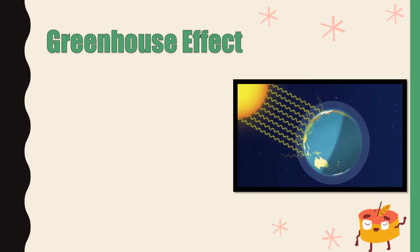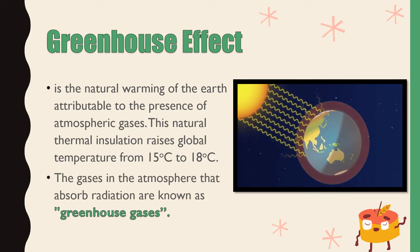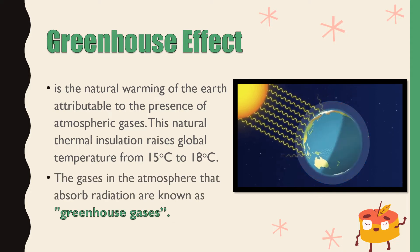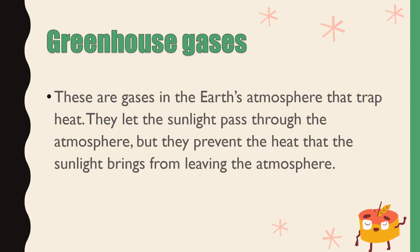What is the greenhouse effect? The greenhouse effect is the natural warming of the Earth attributable to the presence of atmospheric gases. This natural thermal insulation raises global temperature from 15 degrees Celsius to 18 degrees Celsius. The gases in the atmosphere that absorb radiation are known as the greenhouse gases. They let the sunlight pass through the atmosphere, but they prevent the heat that the sunlight brings from leaving the atmosphere. When the concentration of greenhouse gases increases, the temperature of the Earth gets higher.